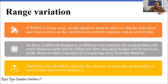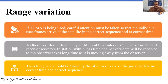For range variation, we are talking about time slots with respect to TDMA — time division multiple access. If TDMA is used in transmission and reception of the signal, each signal is given a particular time slot in which data or packets need to be transmitted, and only within that time interval will the earth station receive that signal. So careful attention must be taken so that individual user frames arrive at the satellite in the correct sequence and at the correct time.